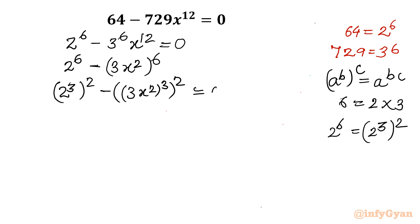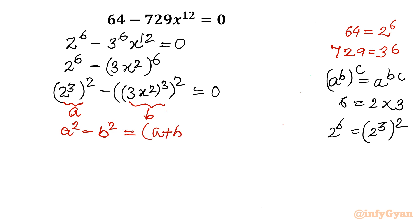I will write (2³)² minus (3x²)³ whole squared. I was framing the difference of two squares formula. Now I will apply a² minus b², which equals (a + b)(a − b). So here a is (2³) and b is (3x²)³.